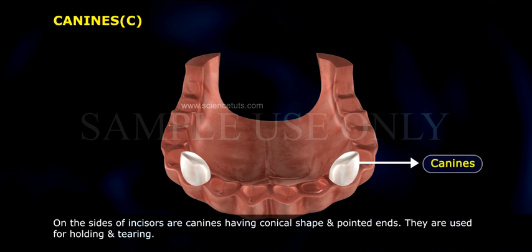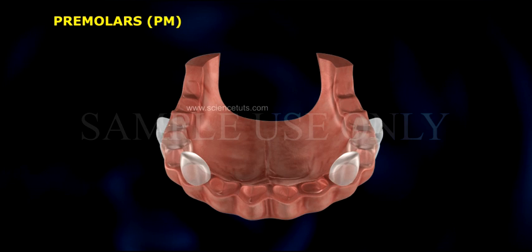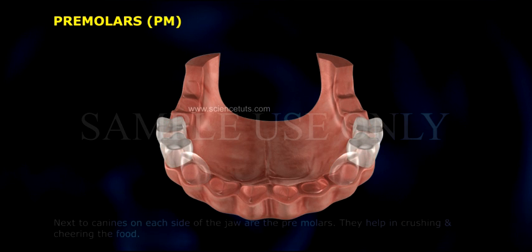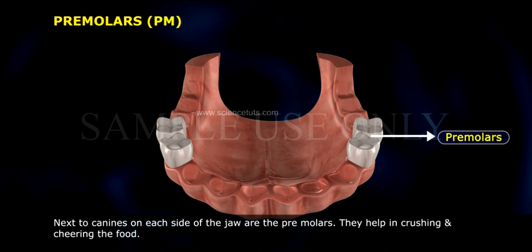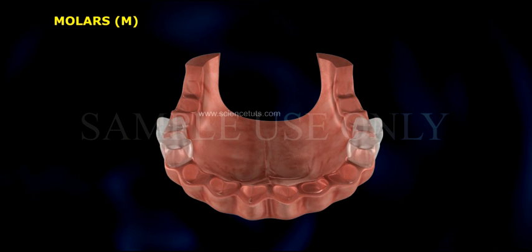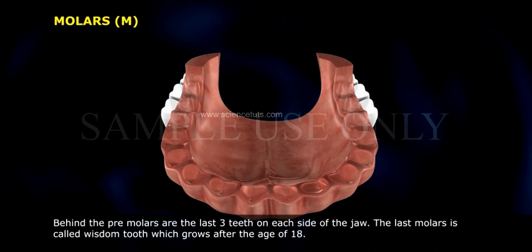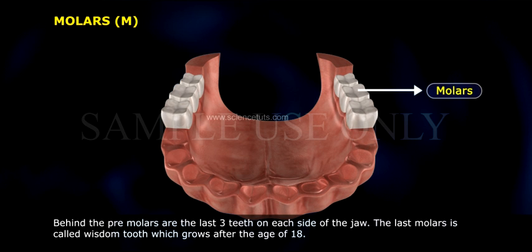Canines (C): on the side of incisors are canines, having a conical shape and pointed ends. They are used for holding and tearing food. Pre-molars (PM): next to canines on each side of the jaw, they help in crushing and chewing the food. Molars (M): behind the pre-molars are the last three teeth on each side of the jaw. The last molar is called the wisdom tooth, which grows after the age of 18.